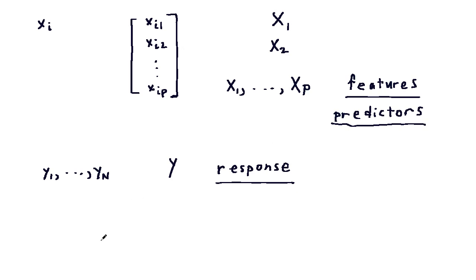In linear regression, we assume that the response depends on the input variables in a linear fashion. So y equals f of x plus epsilon.